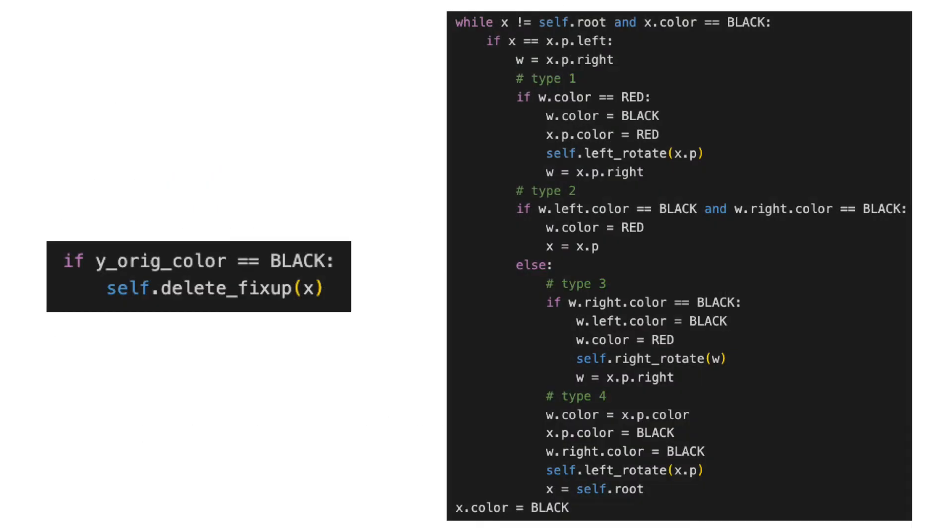I'll show you that quickly in the delete-fix-up code which is on the right. Again, I know it's small and later we'll break it down step by step, but you can see by the control flow that more than one fix can happen in an invocation.